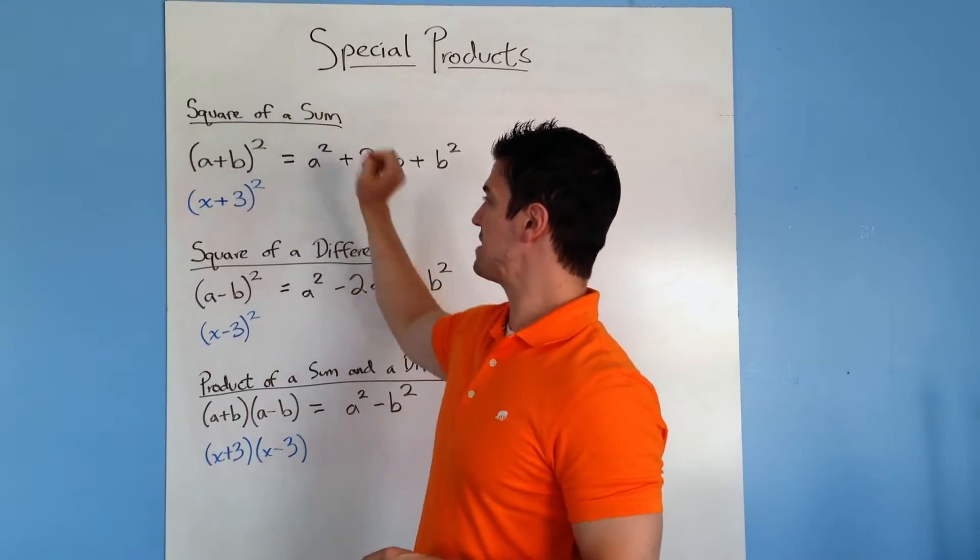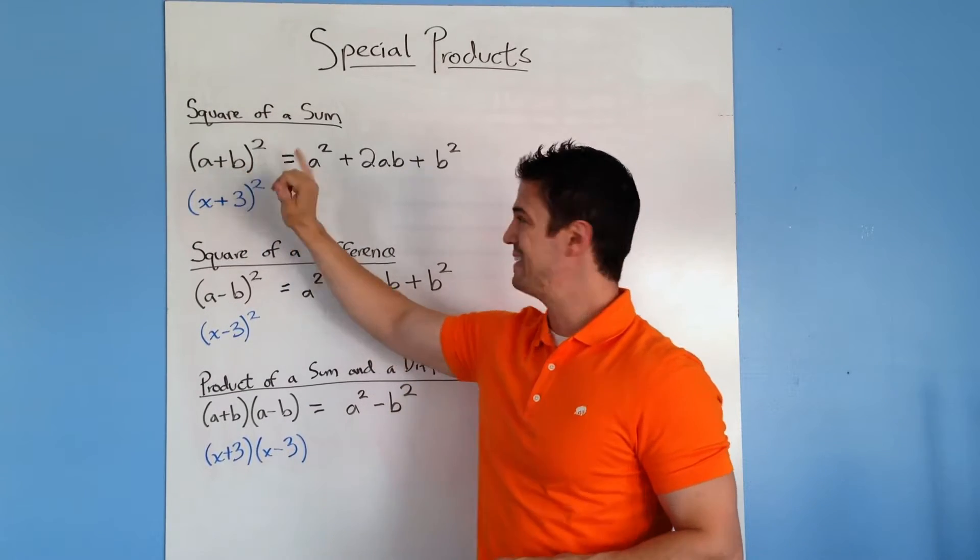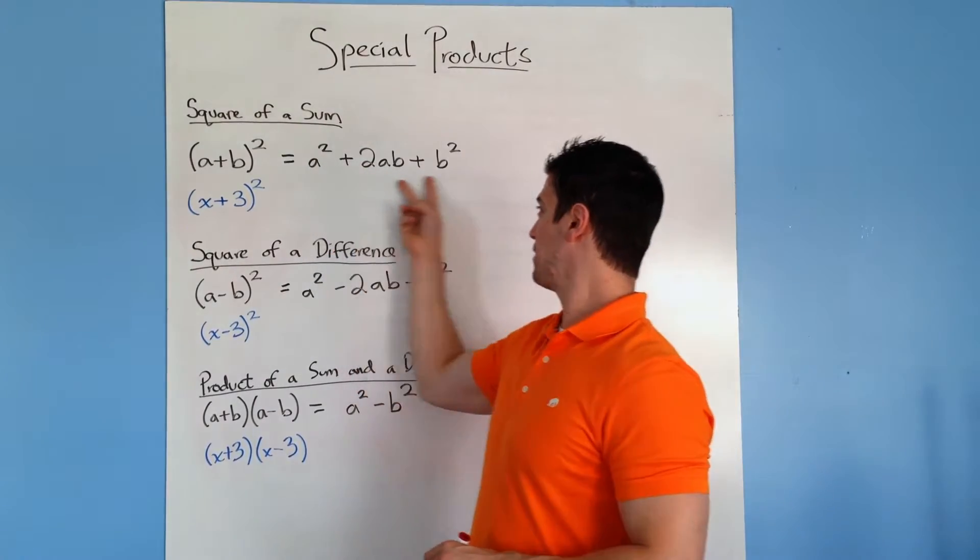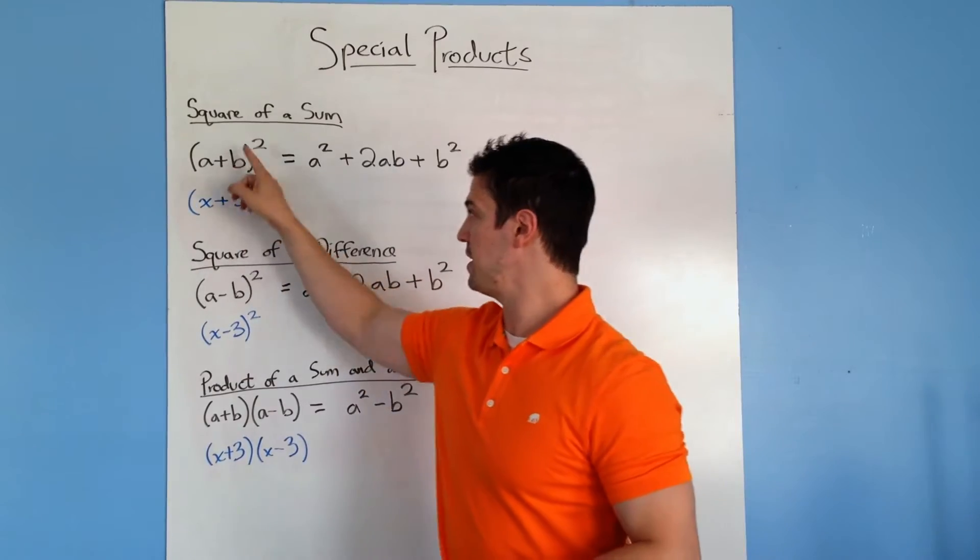This first one is the square of a sum. So you have a sum right here, a plus b, and then it's squared. It's equal to a squared plus 2ab plus b squared. Now, how do you get this formula? Well, you just distribute the a plus b squared.